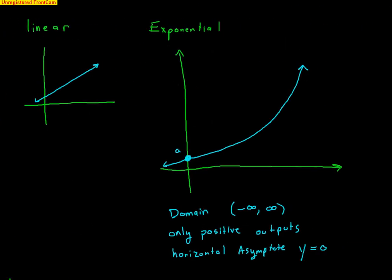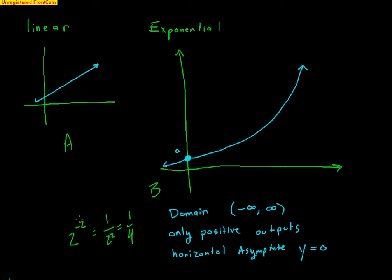Here's what these two graphs look like. The linear graph represents Company A, going up by 50 every year — a constant rise. Company B's exponential graph grows slowly at first, then as the years tick by, growth increases exponentially, getting bigger and bigger. The domain of an exponential function is negative infinity to infinity. When you plug in negatives, you get smaller — for example, 2 to the negative 2 is 1/4 — so the function never becomes negative. There's a horizontal asymptote at zero.